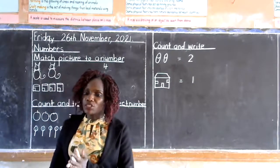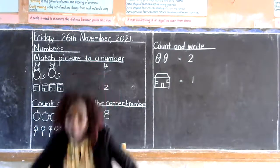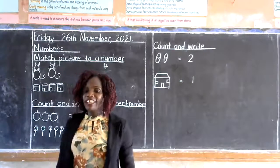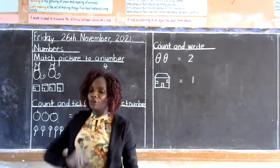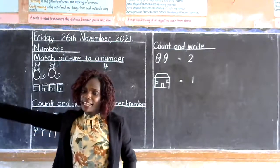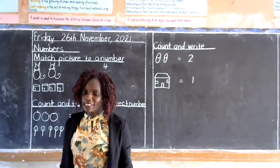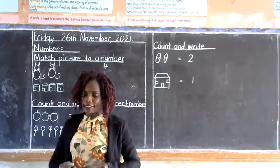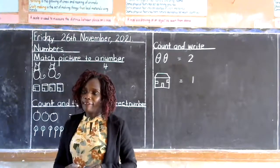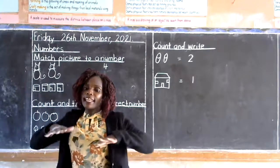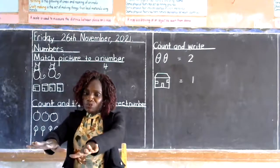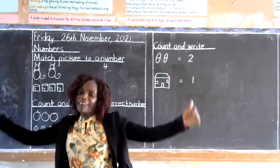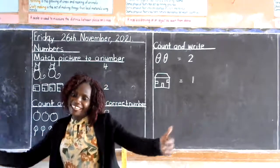One, two, buckle my shoes. Three, four, shut that door. Five, six, pick up sticks. Seven, eight, lay them straight. Nine, ten, a big fat hen!